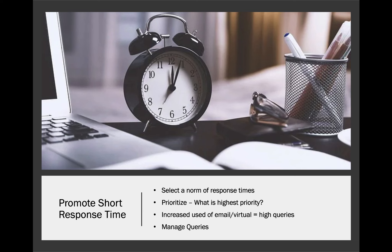To give you a visual summary of the three things to help decrease uncertainty in team processes: apply a formal structure in your group development, especially when developing new groups for a short period of time. Establish guidelines for communication. And promote short response time if possible.